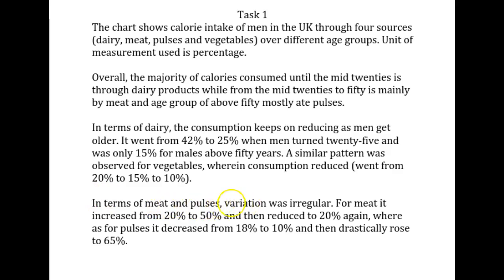In terms of meat and pulses, the proportion of total caloric intake fluctuated throughout life. 'Fluctuated' means an irregular variation. The consumption of meat increased from 20% to 50%, but then dropped down to 20% once more. Whereas — and note that 'whereas' is one word — the consumption of pulses decreased from 18% to 10%, and then rose dramatically to 65%.